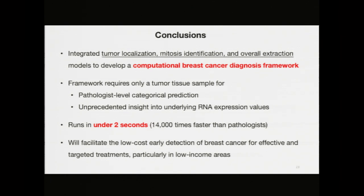In conclusion, my model is the first ever to integrate tumor localization, mitosis identification, and overall general extraction models to develop a computational breast cancer diagnosis framework. My framework requires only a small tumor tissue sample for pathologist-level categorical prediction and unprecedented insight into the molecular underpinnings of tumor growth and spread. Running in under two seconds at a fraction of current costs, my model performs at 14,000 times the speed of current pathologists with the same accuracy, providing significant implications for clinical practice and facilitating low-cost early detection of breast cancer for effective and targeted treatments in the future.